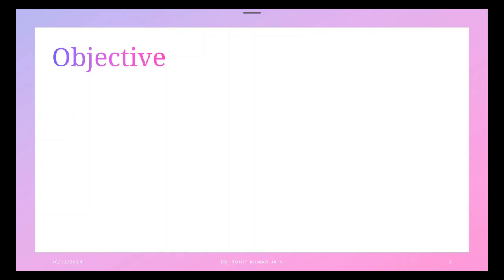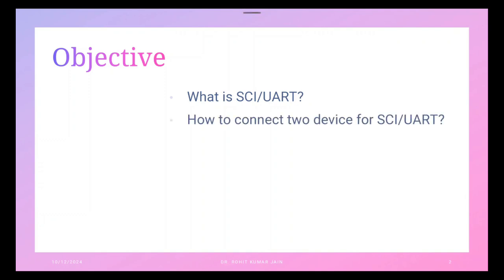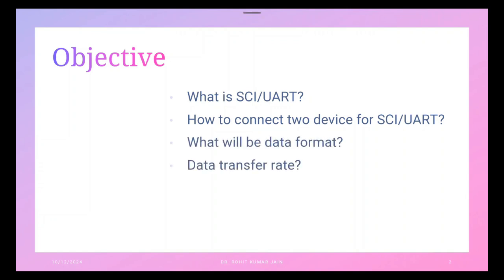The objective for this video is to make you familiar with the serial communication interface and UART. When you are familiar with SCI, you will be able to connect two or more devices for serial communications, understand the data format and data transfer rate, and understand SCI multiprocessor communications.